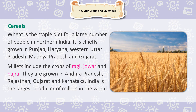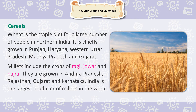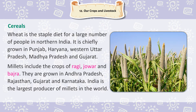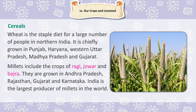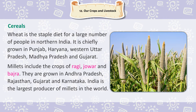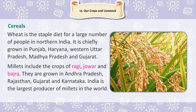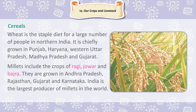Millets include the crops of ragi, jowar and bajra. They are grown in Andhra Pradesh, Rajasthan, Gujarat and Karnataka. India is the largest producer of millets in the world.